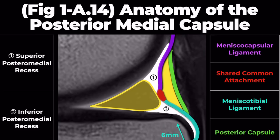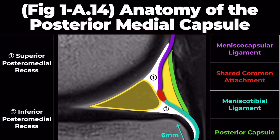Today we're diving into the anatomy of the knee's posteromedial capsule. Understanding this structure is crucial, as it's prone to injuries including the elusive ramp lesion, making diagnosis challenging.